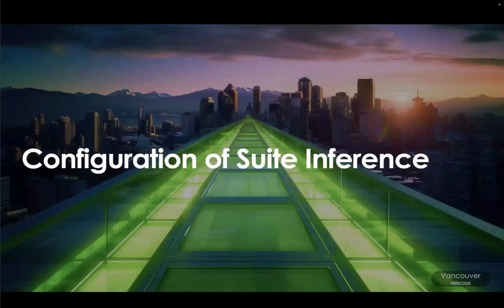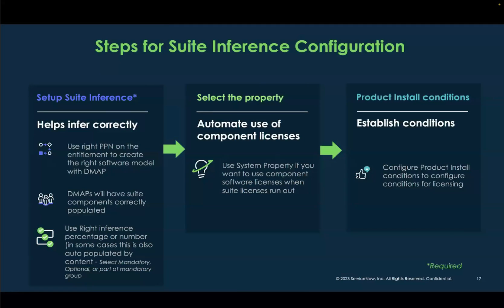Coming to configuration, these are the steps. First, set up your suite inference so that it helps infer correctly. Use the right publisher part number, which will create the entitlement and automatically create the software model with the right discovery map. Discovery maps auto-populate the components. Use the right inference percentage or number — in some cases this is auto-populated by content automatically — and then select whether components are mandatory, optional, or part of a mandatory group.